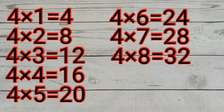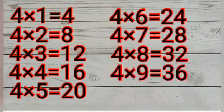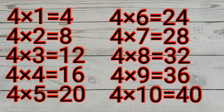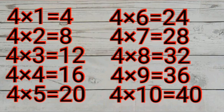Four eights are 32. Four nines are 36. Four tens are 40. Come on, let's recap.